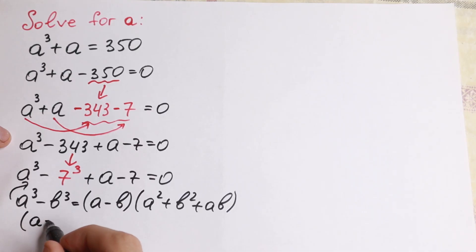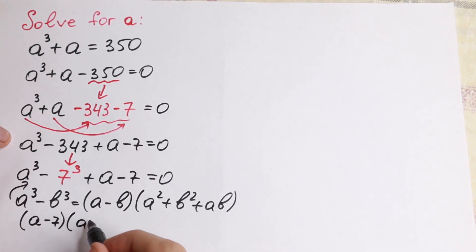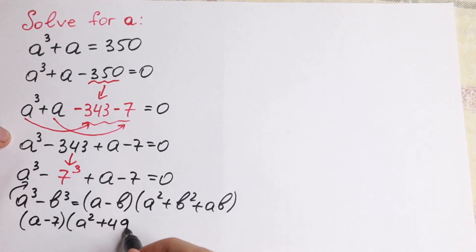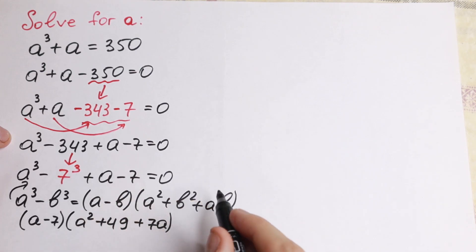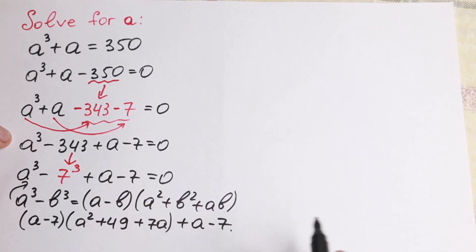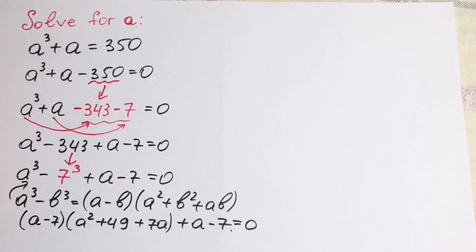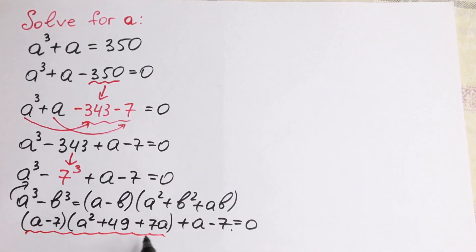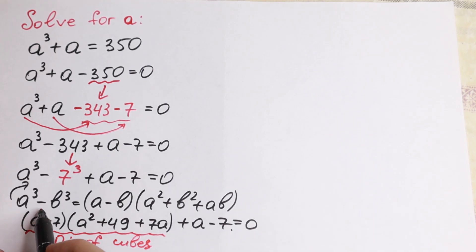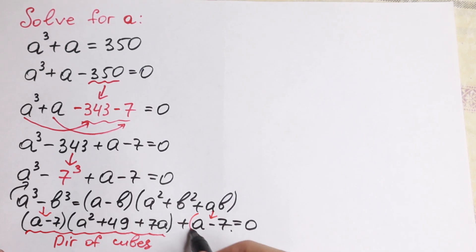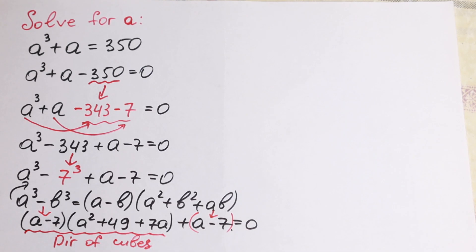So we will have a minus 7 times a square plus 49 plus 7a, and of course the last part plus a minus 7 equal to 0. We just applied the difference of cubes formula, which corresponds to this a cube minus 7 cube. As you can see we have a minus 7 right here and a minus 7 right here, which we can put into parentheses and easily factor.